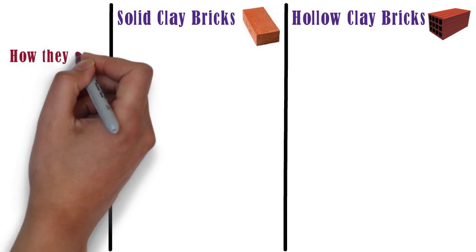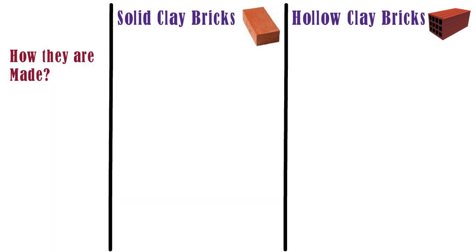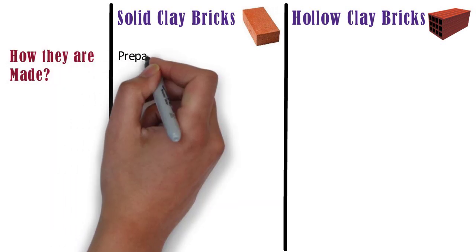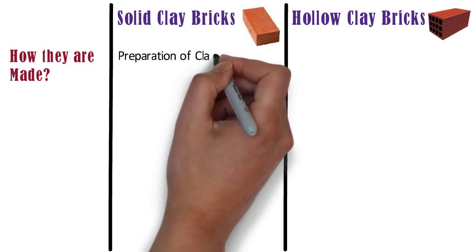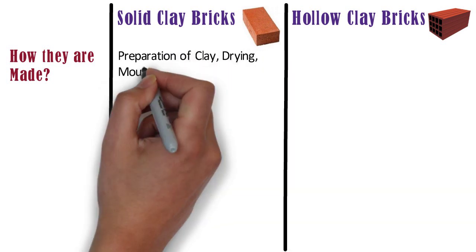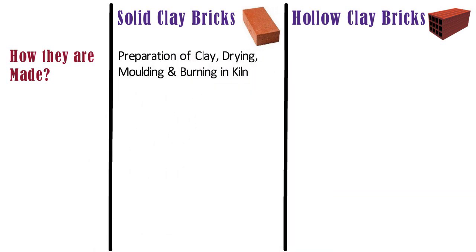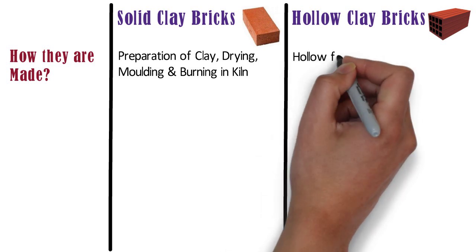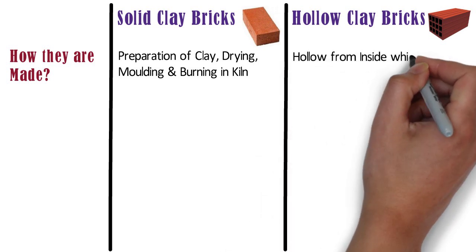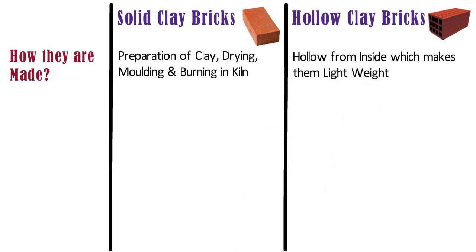How are they made? Manufacturing of solid clay bricks involves preparation of clay, drying, molding, and burning in a kiln at high temperature to harden it. Whereas, hollow clay bricks are hollow from inside which makes them lightweight and more efficient.